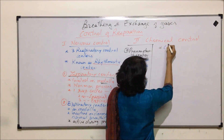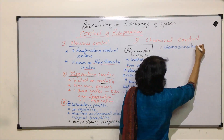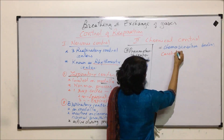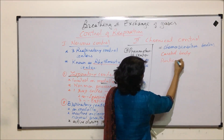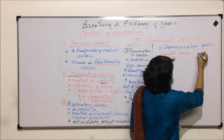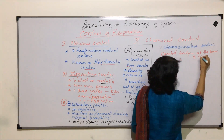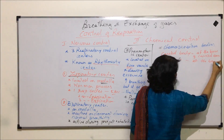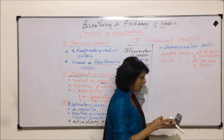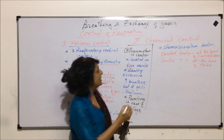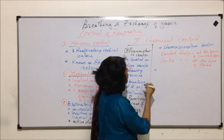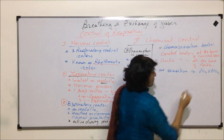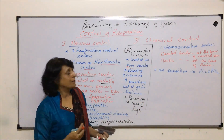The chemosensitive bodies are of two types. One is called the carotid body, and the other is known as the aortic body. The carotid body is located at the base of the carotid sinus, and the aortic body is located at the base of the aorta — the place from where the aorta is arising. Both the carotid and aortic bodies are sensitive to PO2 and PCO2, that is, partial pressure of oxygen and partial pressure of carbon dioxide.